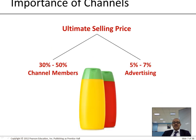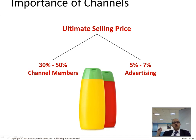We've got the ultimate selling price — you need to take care of your merchants or distributors. If you pay on average 7% in advertising, you need to pay 30 to 50% to the channel member. Do you guys know those small book shops? They normally take 50% of the price of the book. So if the book is 2,000, they make 1,000.